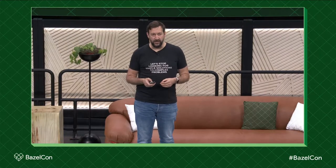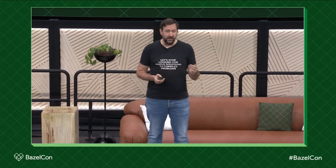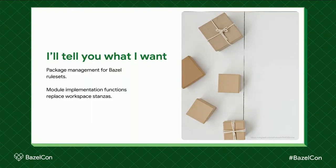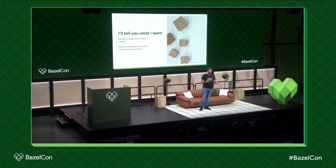The nice thing with module.bazel is it replaces many lines of repeated stanzas in your WORKSPACE with a single declaration. A stanza is: the http_archive, the load of the function that provides transitive deps and you call that function, then the load of the setup function that sets up toolchains and you call that function. So you replace four lines with one. It's really quite a nice way of working.